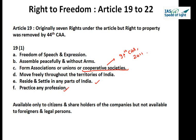Article 19 Part 2 says nothing in sub-clause (a) shall affect the operation of any existing law or prevent the state from making any law imposing reasonable restrictions in the interest of the sovereignty and integrity of India, the security of the state, friendly relations with foreign states, public order, decency or morality, or in relation to contempt of court, defamation, or incitement to an offense. These are the grounds on which the government can curtail freedom of speech and expression.